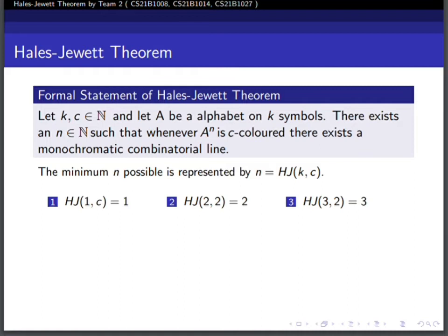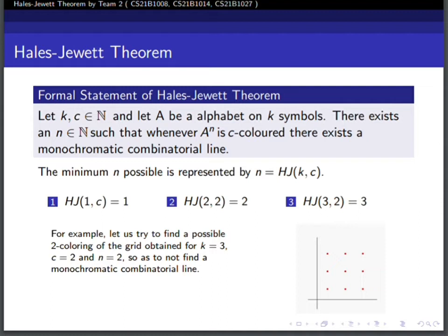In the first case, HJ(1,c) equals 1 because every line is monochromatic. In the second case, HJ(2,2) equals 2, and in the third case, HJ(3,2) equals 3. Let me explain using an example with k=3, c=2, and n=2, which gives a 2D 3×3 grid.